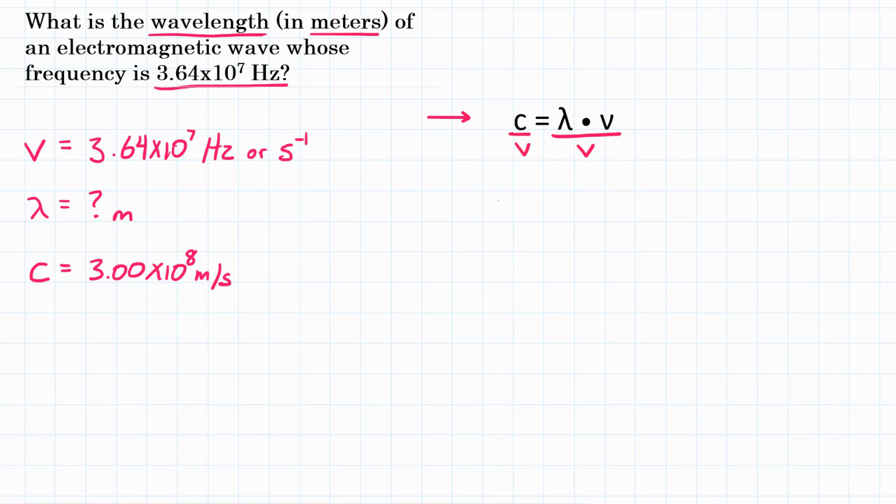We're doing that so that on the right side where we have wavelength, frequency will cancel out and we'll be just left with wavelength. So we can rearrange the equation, and I'm going to flip it so that wavelength is on the left side. Wavelength is going to be equal to the speed of light divided by frequency.